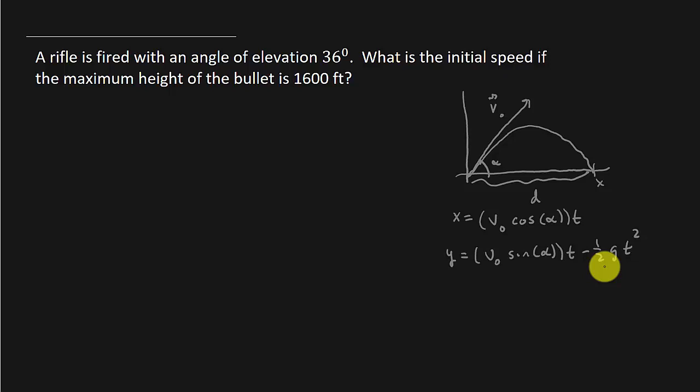Let's see how do we go about solving this? We can set up our position vector, R of T equals V naught, that's what we're looking for, times cosine of 36, that's our alpha, 36 T, and this is all times vector I plus V naught sine 36 T minus one half G T squared times vector J.